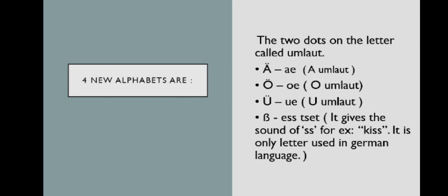And the last alphabet of German is HZ. It gives the sound of double S. For example in English KISS. KISS and it is the only letter used in German.